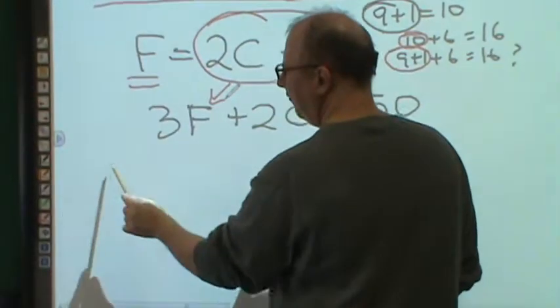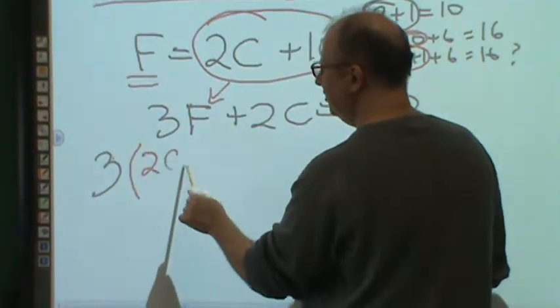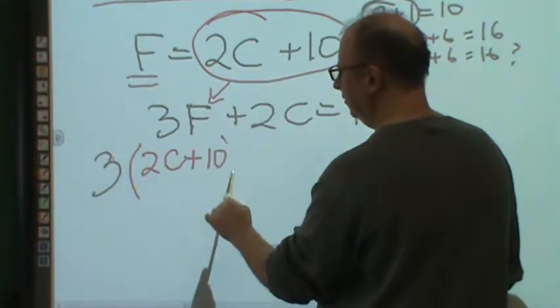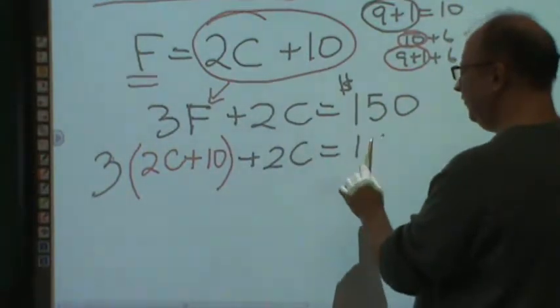Let's look what I'm left with. Three times 2C plus 10 plus 2C is equal to 150.